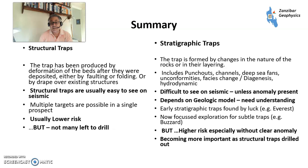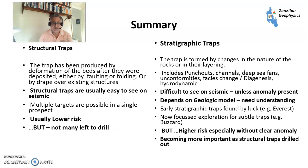Stratigraphic traps are formed by changes in the nature or layering of rocks — including pinch-outs, channels, deep-sea fans, unconformities, facies changes caused by diagenesis, and some hydrodynamic traps. They can be harder to see on seismic unless you have a direct hydrocarbon indicator. You need to understand the geological model. Some early stratigraphic traps were found by luck — for example, Everest, drilled for a deeper target that didn't work. Others like Buzzard, a large North Sea discovery, were found by deliberately looking for subtle traps. These are higher risk, but they're becoming more important as structural traps are drilled out.